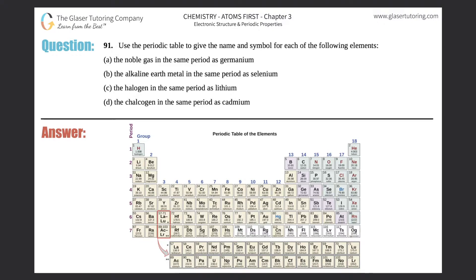Number 91: Use the periodic table to give the name and symbol for each of the following elements. I have a through d, so let me just quickly write a through d on the right hand side. They want the name of the element and the symbol. The symbol is either the one or two letter code, so for example the symbol for oxygen would be O, the symbol for lithium would be Li.